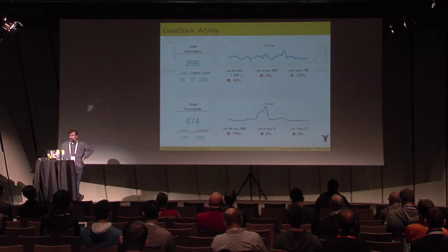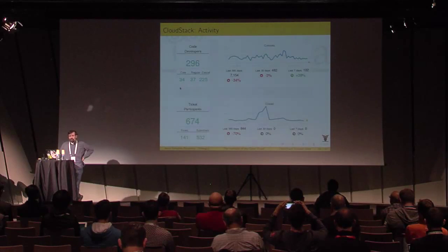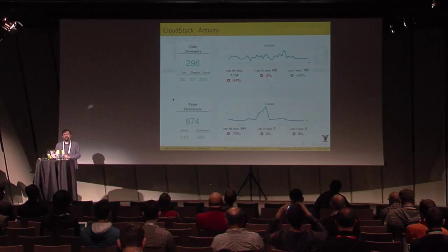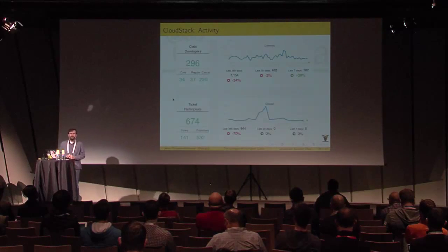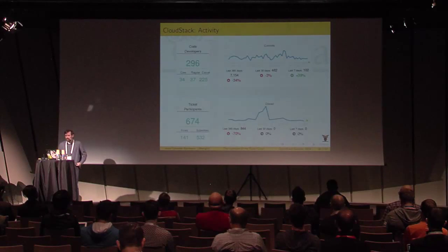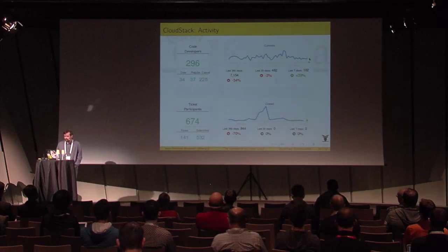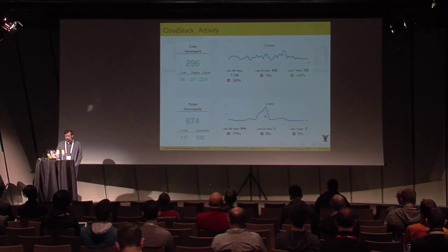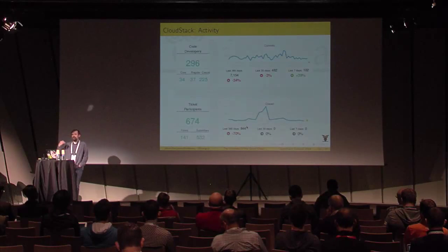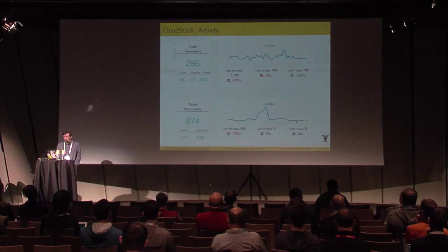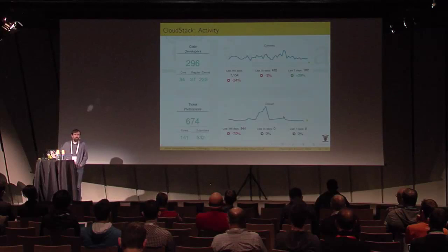For CloudStack, we have more core developers and a larger core, plus a very large number of fixers. In this community it seems that to fix a bug you don't need to be in the core team — some people outside the core are also fixing bugs. The number of submitters is bigger too, so more people are involved to the point of at least opening a ticket. With respect to the trend, it is more stable than the others, in the order of 1000 commits per month. Tickets closed per month are like 50 to 100.